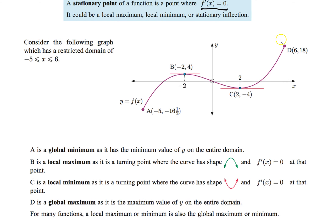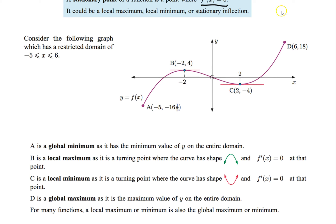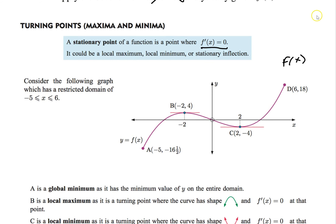Here's our graph of f'(x) — a basic f'(x) graph. Remember how we figure out where the derivative equals 0? It's where we have horizontal tangent lines. The point of a stationary point is: if the derivative equals 0, it's either going to be a local max, a local min, or a stationary inflection. Those are your three options.